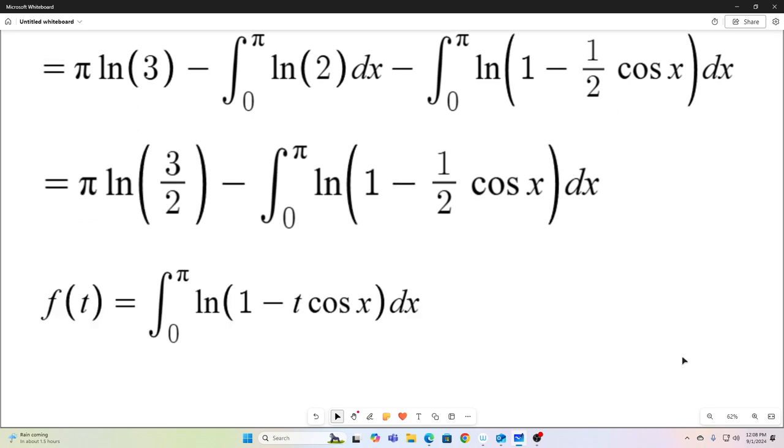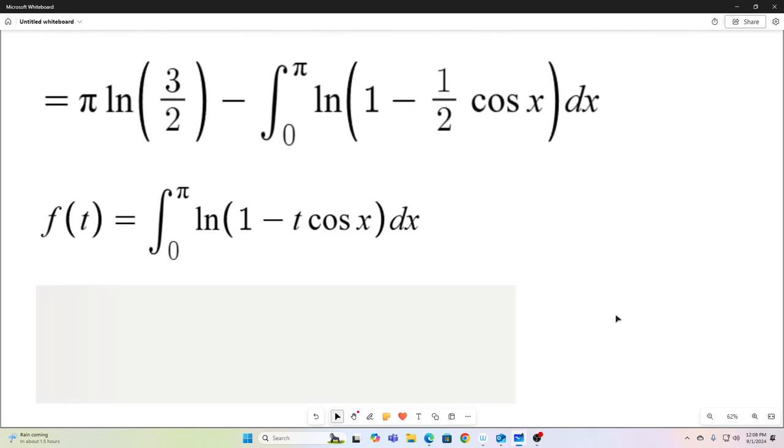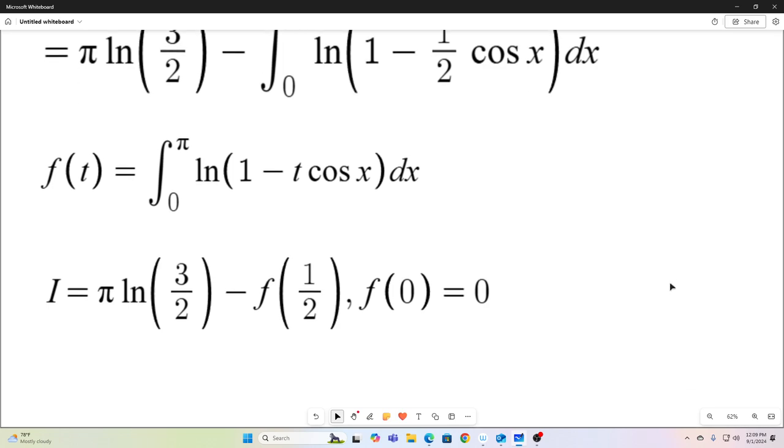Okay, now comes time for the reparameterization. We're going to let f of t equal this integral. And as you can see, I just took this integral and replaced this 1 half with a t. And now we'll note a couple things about f of t. If we evaluate f at 1 half, what do we get? We get exactly this integral. So our original integral is actually equal to π natural log 3 halves minus f of 1 half. And if we evaluate our function at the point t is equal to 0, we get 0 because we'll just have a 1 minus 0, which is 1, natural log of 1 is 0. So the whole integral evaluates to 0.